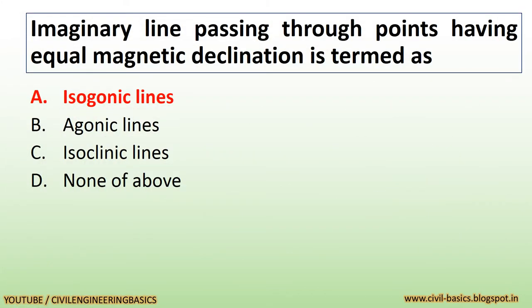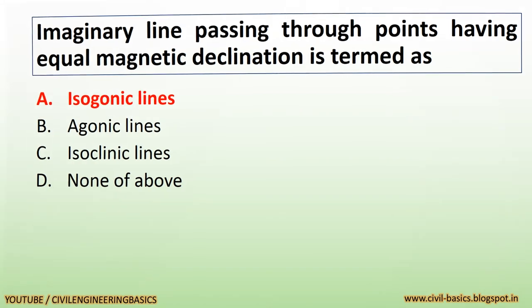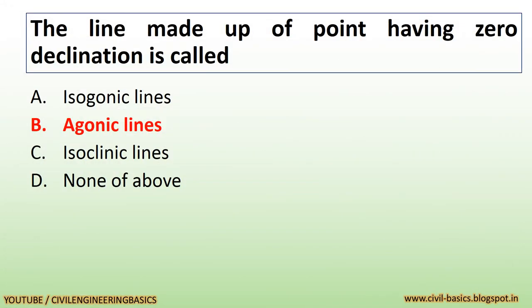Imaginary lines passing through points having equal magnetic declination are termed as isogonic lines. The line made up of points having zero declination is called agonic lines.